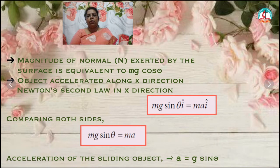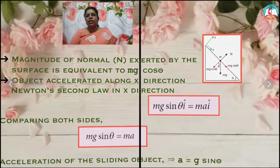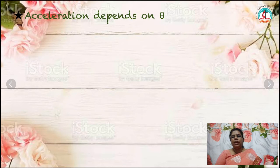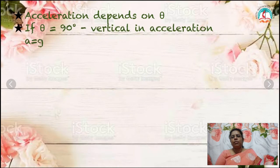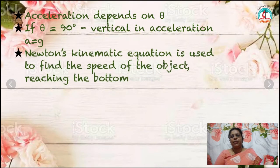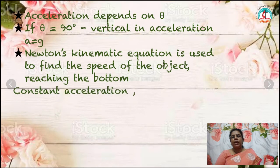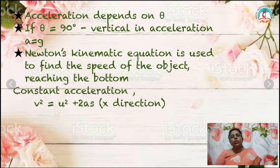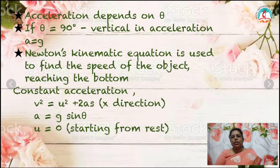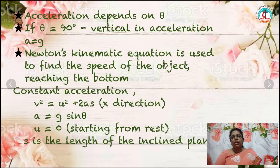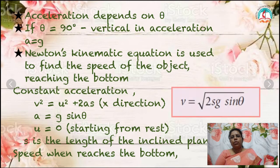Now we have to find the speed. We know a equals g sin theta, and acceleration depends on theta. If theta is 90 degrees, sin 90 becomes 1, so acceleration a equals g. Newton's kinematic equation is used to find the speed when the object reaches the bottom. Using v squared equals u squared plus 2as, where u equals 0 (initial velocity is zero), we get v squared equals 2g sin theta into s. Therefore v equals the square root of 2gs sin theta.